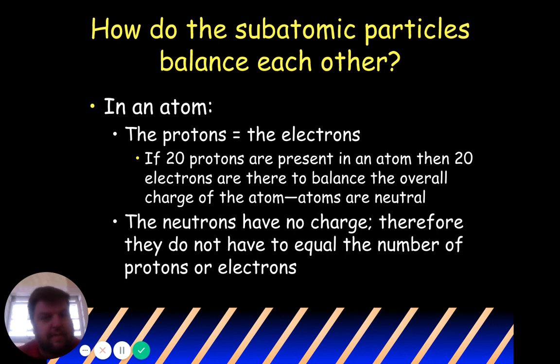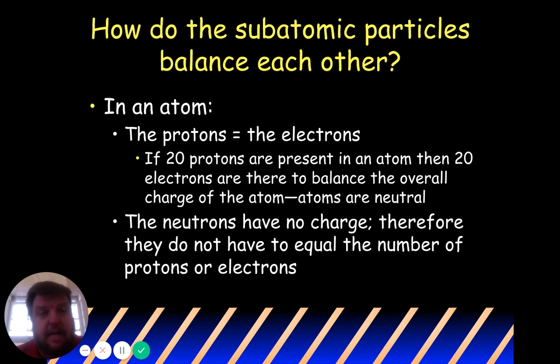The neutrons have no charge, so they don't necessarily equal the number of protons and electrons — they don't have to. And you're going to find out that a lot of times they don't.